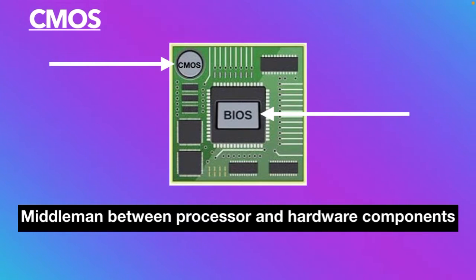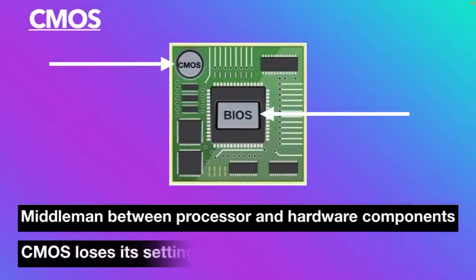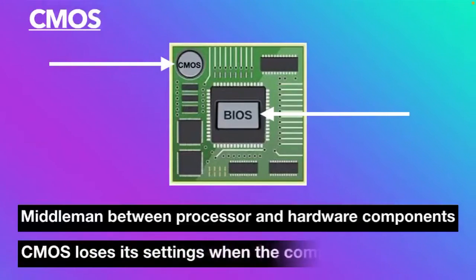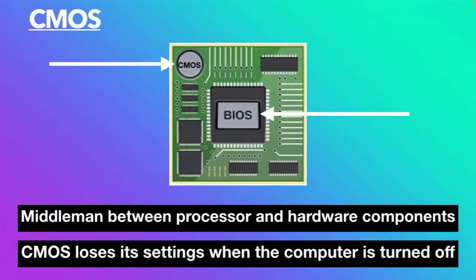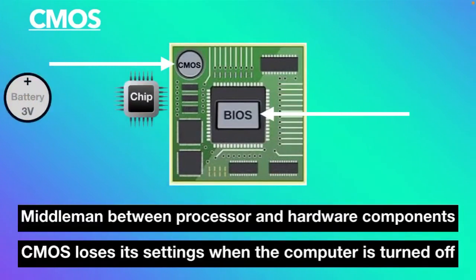On the other hand, CMOS is also a computer chip on the motherboard, but the difference is it loses its settings when the computer is shut down — just like RAM, contents are not saved each time you restart your computer.